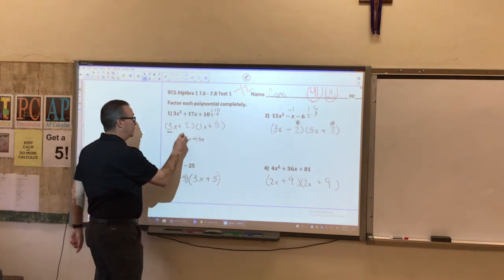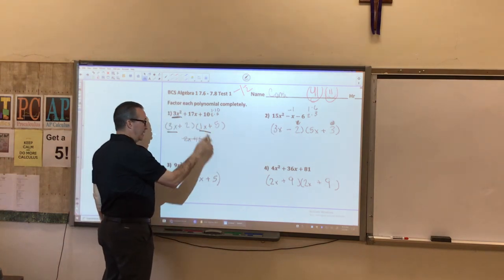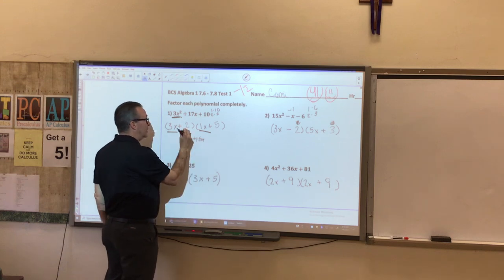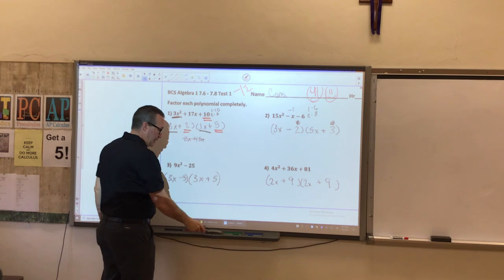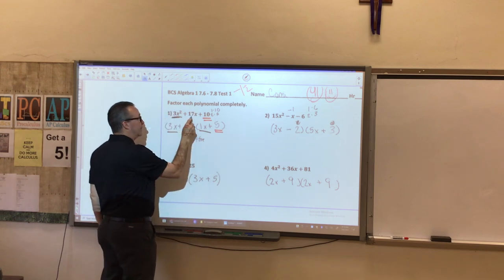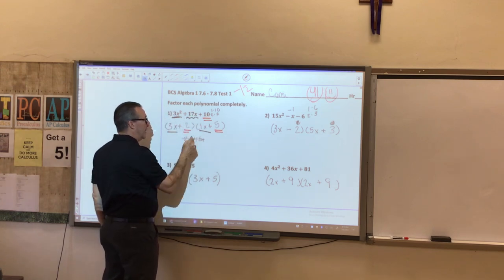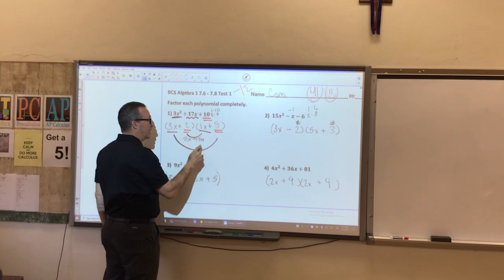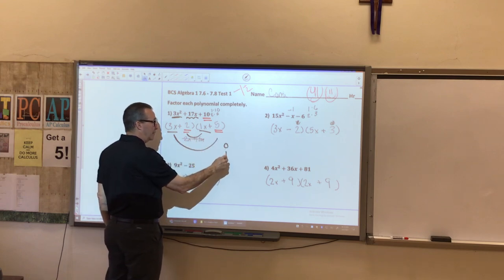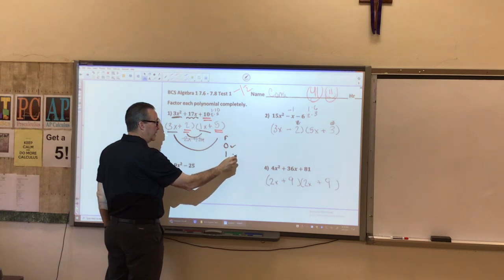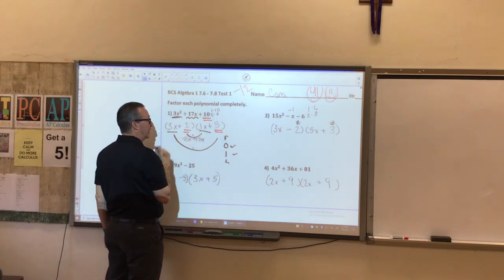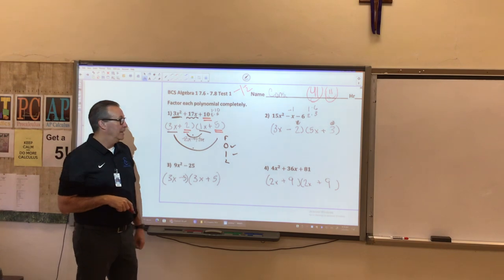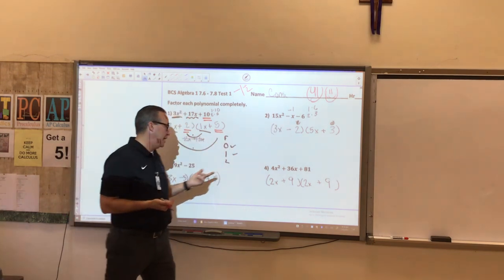Remember, these first two positions have to multiply to that, and then the last two positions have to multiply to that. And then for the middle term, the inside plus the outside, the O and the I of foil, the outside and the inside, those have to add to the middle term. And that's it. And you obviously know that, because we've got all of these right.